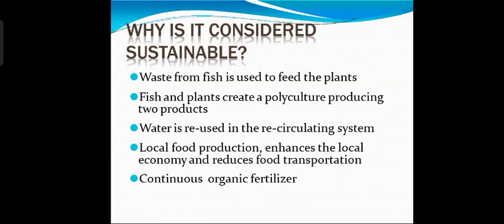Why is it considered sustainable? Waste from fish is used to feed the plants. Fish and plants create a polyculture producing two products. Water is reused in a recirculating system. Local food production enhances the local economy and reduces food transportation. There is also continuous use of organic fertilizer.